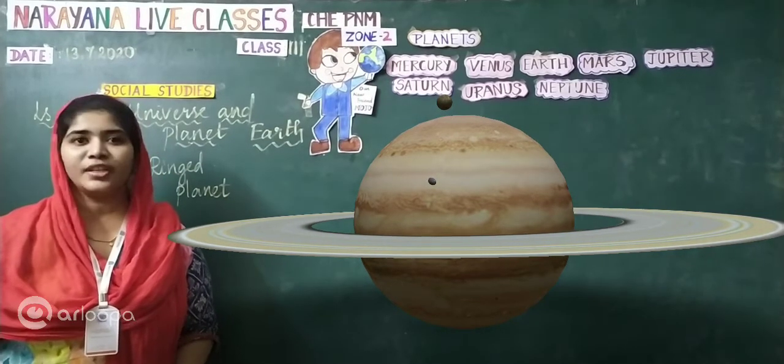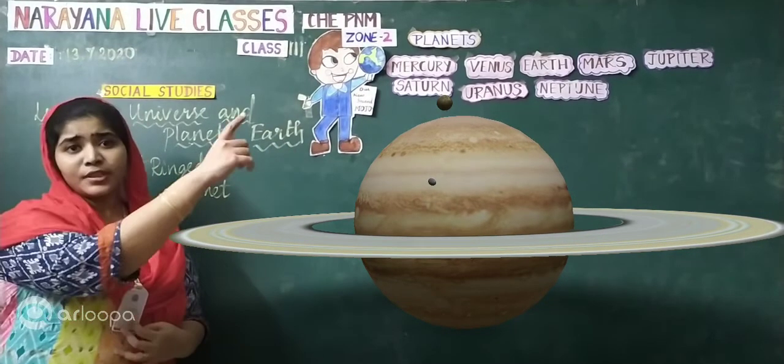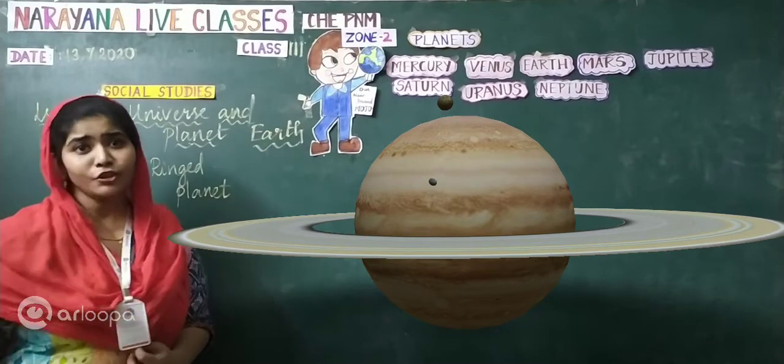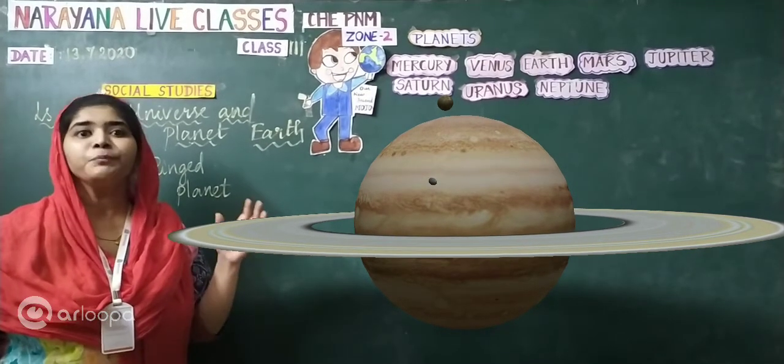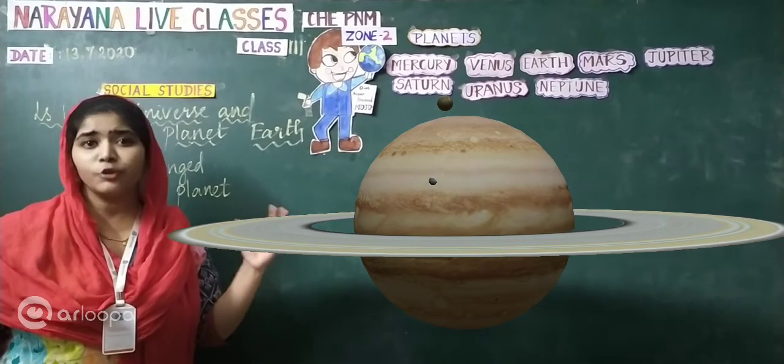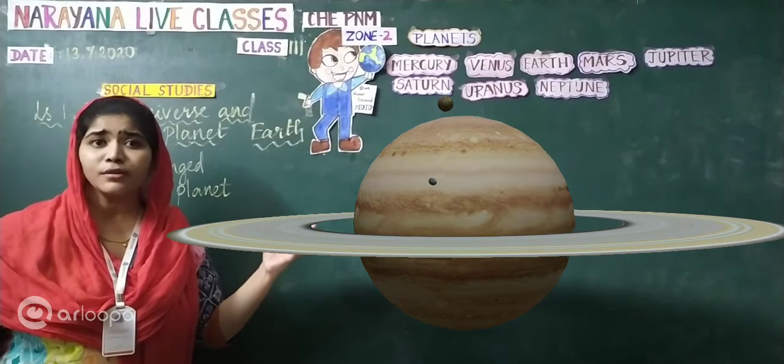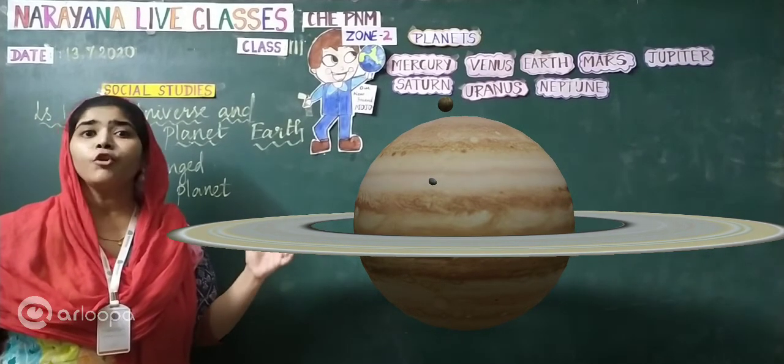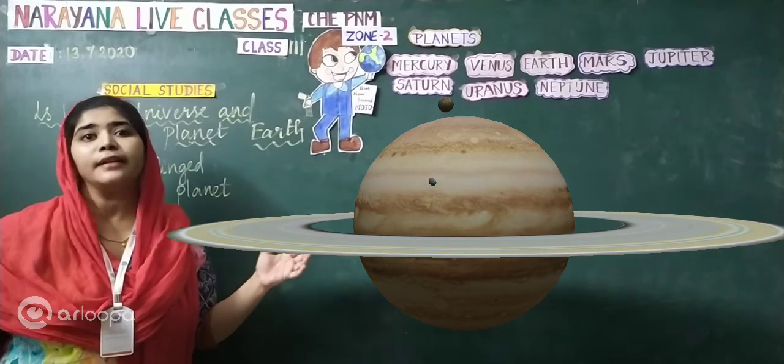It has got many moons, children. You can see some moons surrounding the Saturn in this. Yes my children. You can see some moons. They are all actually moons, those who are revolving around Saturn. Okay children. More than 53 moons are there in Saturn, children.